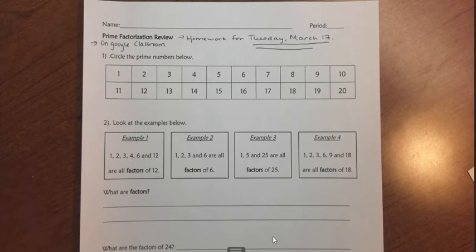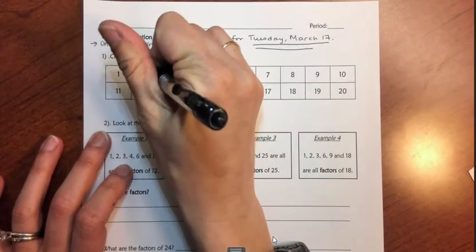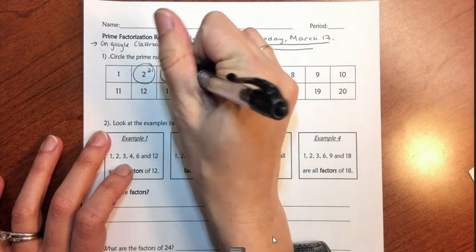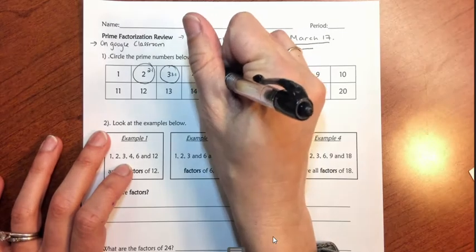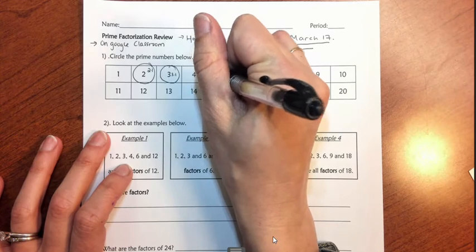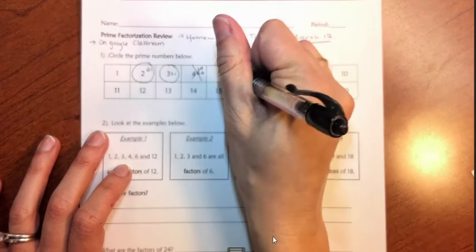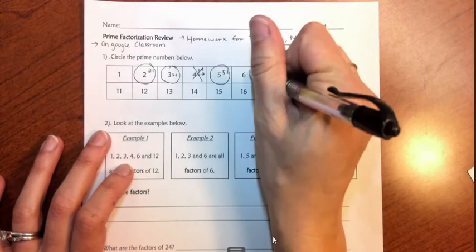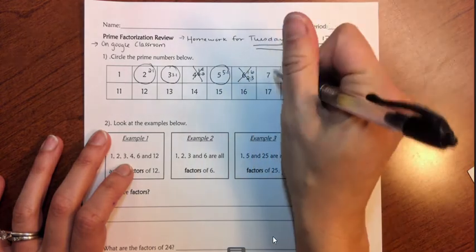Prime numbers are numbers that are only divisible by one and itself. So 2 is a prime number because the only way you can make it is 2 times 1. 3 is a prime number because that's 3 times 1. 4 is 1 times 4 but it's also 2 times 2, so that is not a prime number. 5 — the only way you can make 5 is 5 times 1, so that's prime. 6 is 1 times 6 or 2 times 3, so that's not prime.